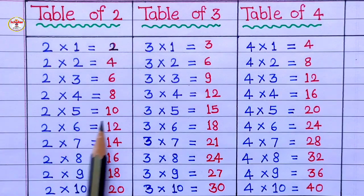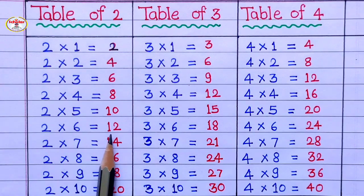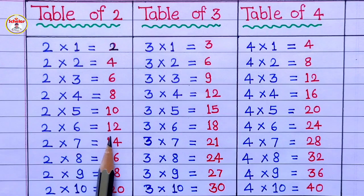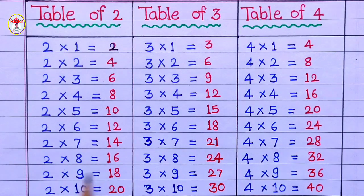2 6's are 12, 2 7's are 14, 2 8's are 16, 2 9's are 18, 2 10's are 20.